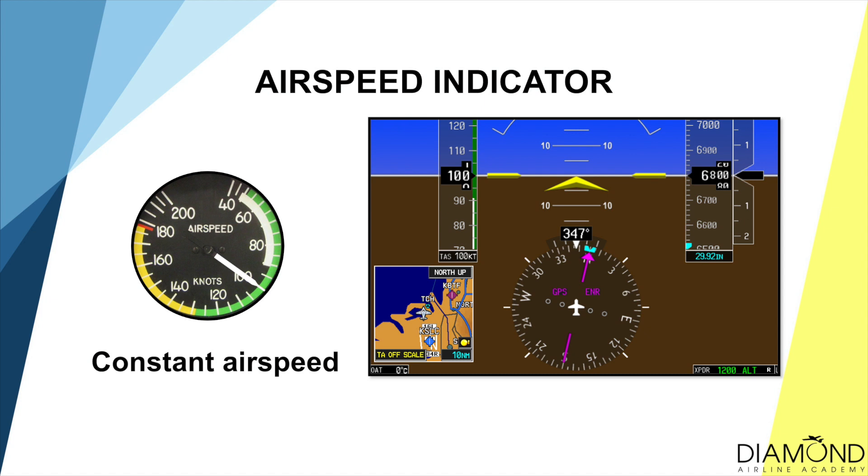Another important indication to look at is the airspeed indicator. In short, when we're flying straight and level we have to maintain a constant speed. In summary, when we're flying straight and level all we're trying to do is maintain straight, maintain altitude, and maintain speed.